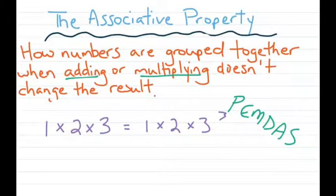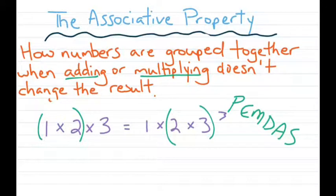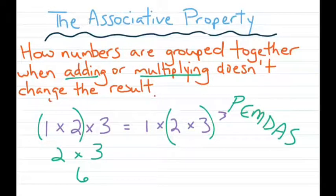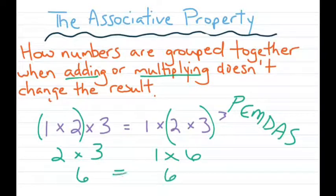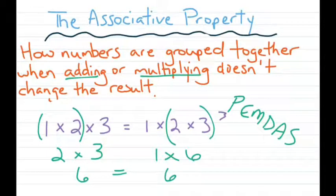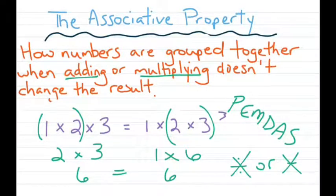Now let's do the same thing with the same numbers except using multiplication. Group 1 and 2 in the first expression, and 2 and 3 in the second. PEMDAS — do parentheses first: 1 times 2 is 2, then 2 times 3 is 6. Over here, 2 times 3 is 6, and 6 times 1 is 6. You still got the same result even though you grouped differently. And again, this does not work with division or subtraction — only addition and multiplication.